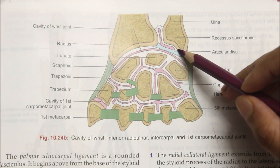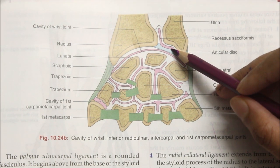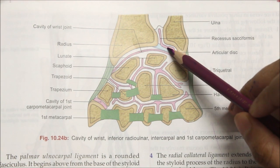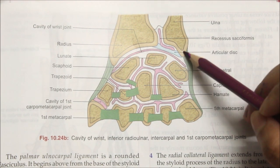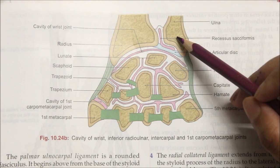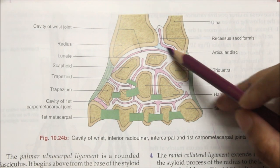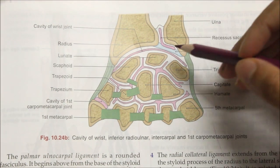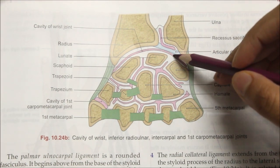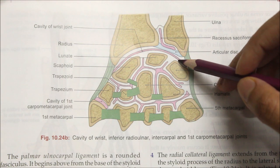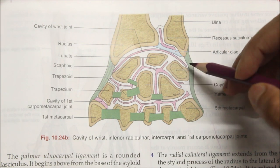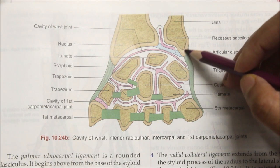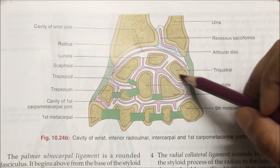A protrusion of the synovial membrane called the recessus sacciformis lies in front of the styloid process of the ulna bone and in front of the articular disc. It is bounded inferiorly by a small meniscus that projects inwards from the ulnar collateral ligament, between the styloid process of the ulna and the triquetral bone.